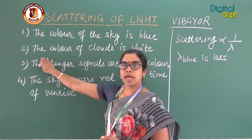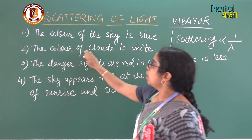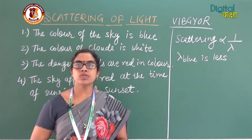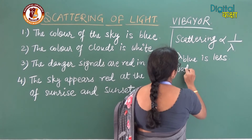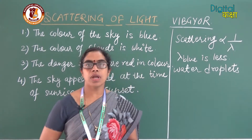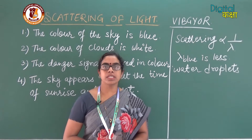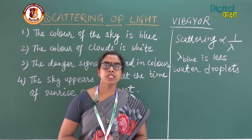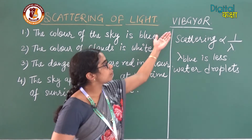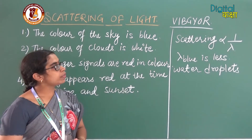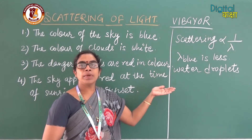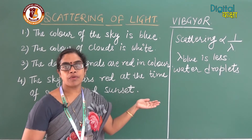The next application is that the color of the clouds is white. The clouds contain water droplets, and the size of these water droplets is so large that when sunlight strikes them, they have the capacity to scatter all seven colors equally. After scattering, the seven colors are seen in combination in the form of white color.